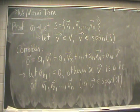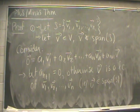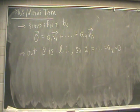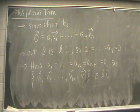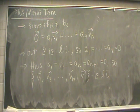Here's where we use a little bit of logic. The coefficient a(n+1) must be equal to 0, otherwise we'd be able to write V as a linear combination of the other vectors inside S — which would mean V is inside the span of S. Because a(n+1) equals 0, our original equation simplifies, and since S is linearly independent, all coefficients a1 through an must also equal 0. Putting it all together, all coefficients a1 through a(n+1) are zero, which tells us that the set {V1, ..., Vn, V} is linearly independent.